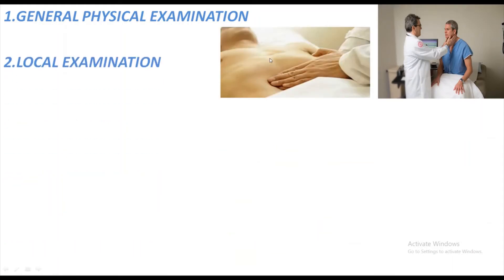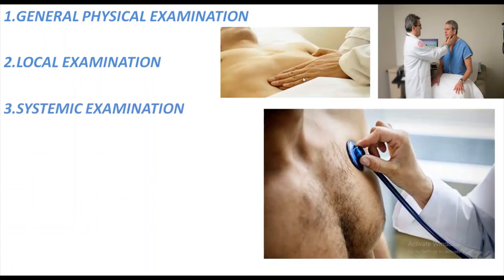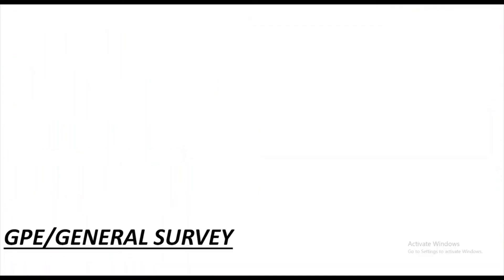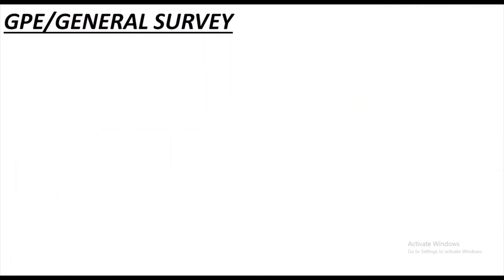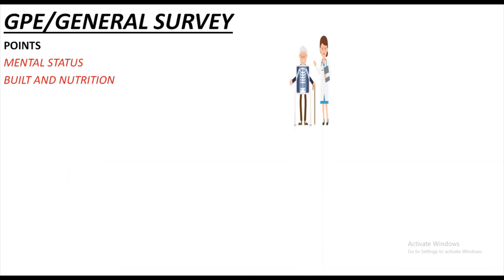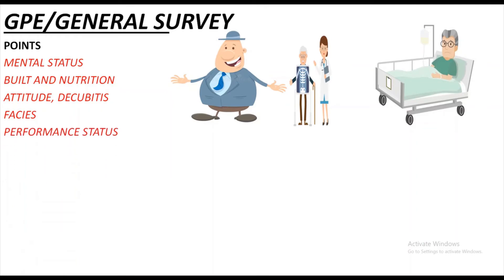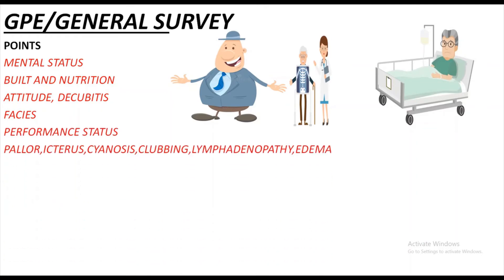You examine the patient from head to toe. Local examination focuses on the affected region — for example, the abdomen for abdominal examination. Then there is systemic examination and the rest of the examination. You make a provisional diagnosis, then a differential diagnosis, then a final diagnosis. The points of general physical examination include mental status, built and nutrition, attitude and decubitus, facies, and performance status.